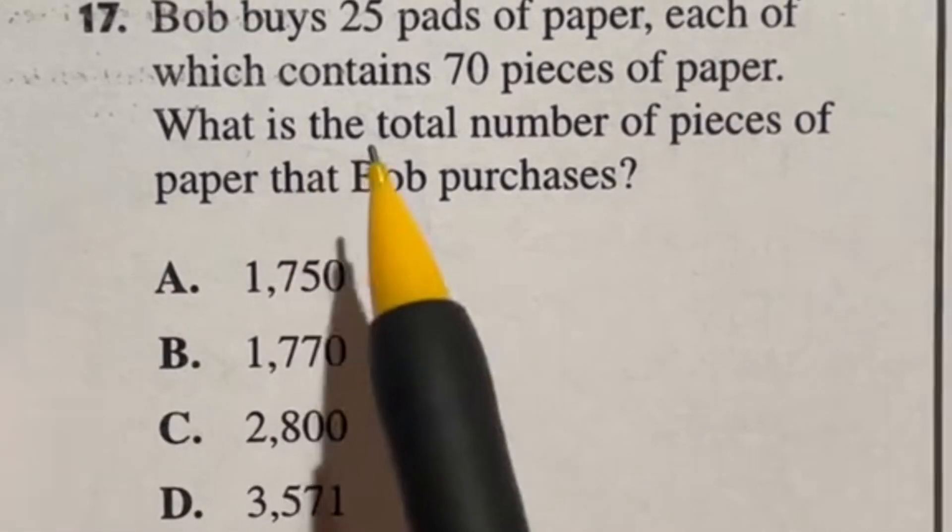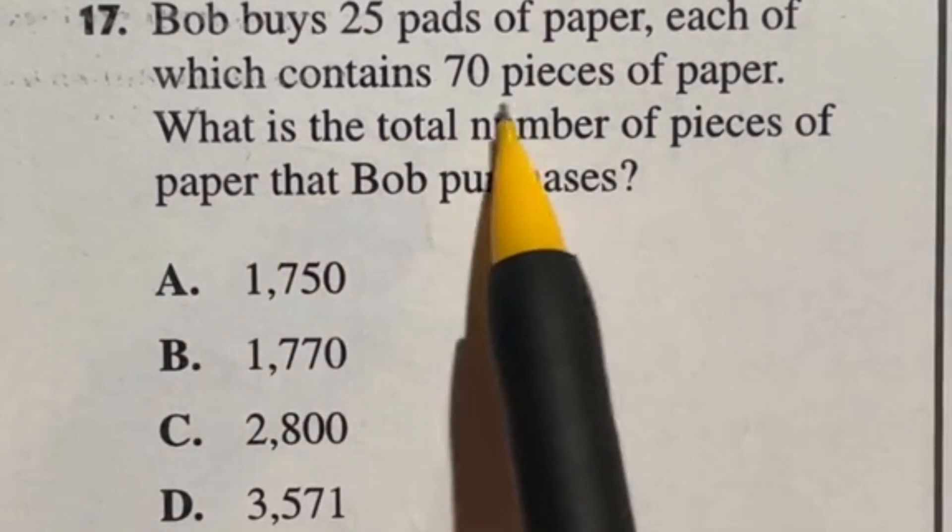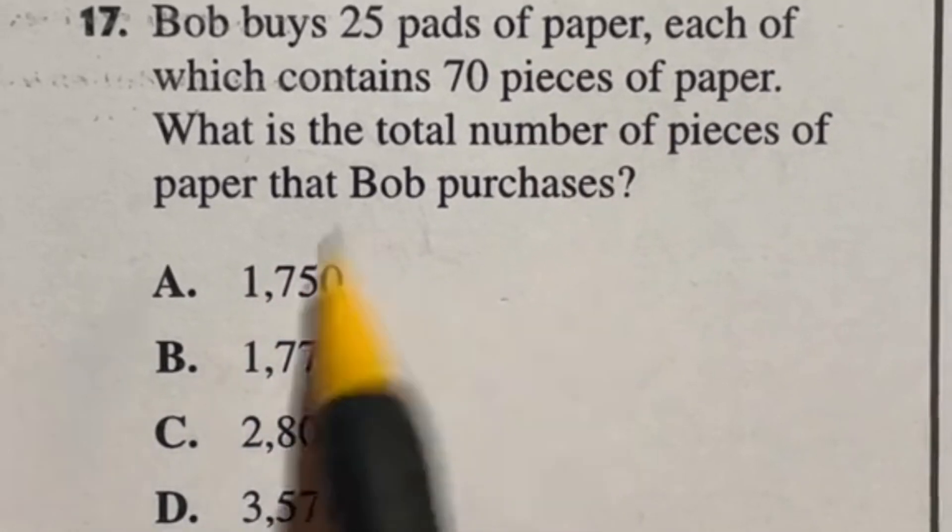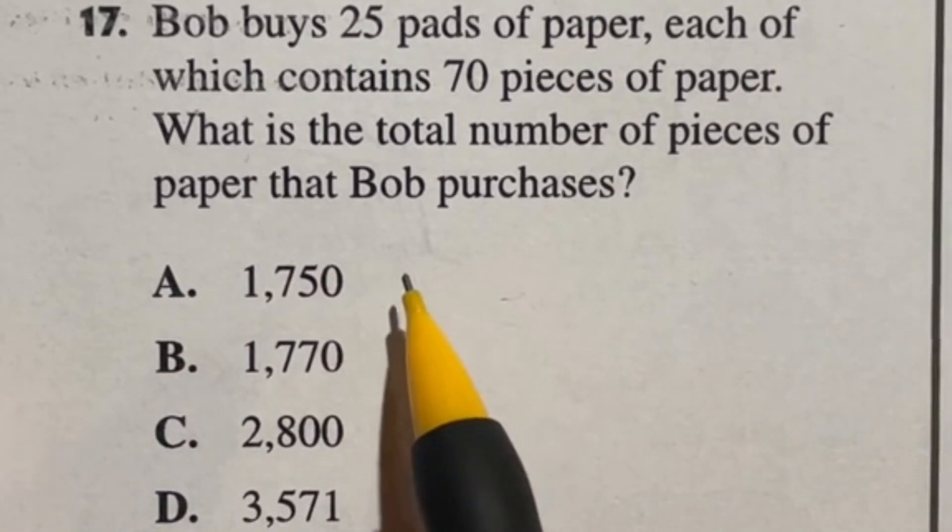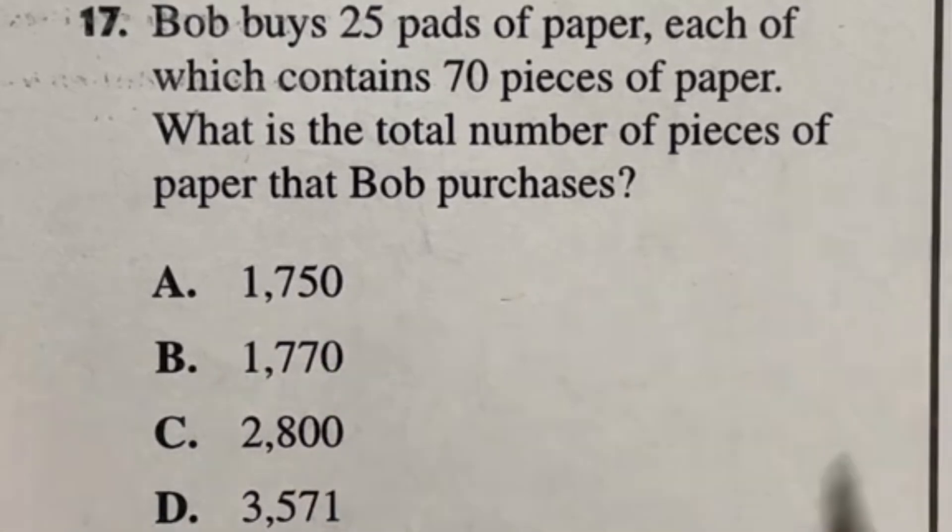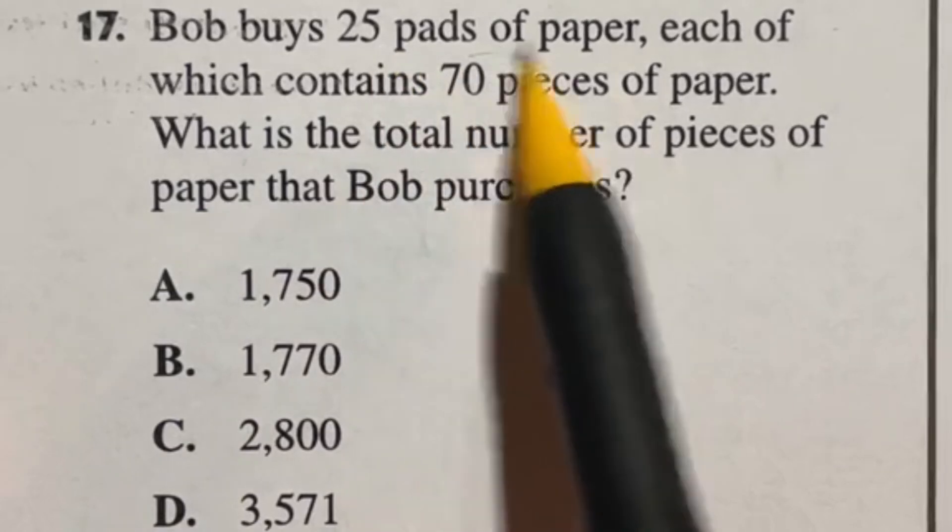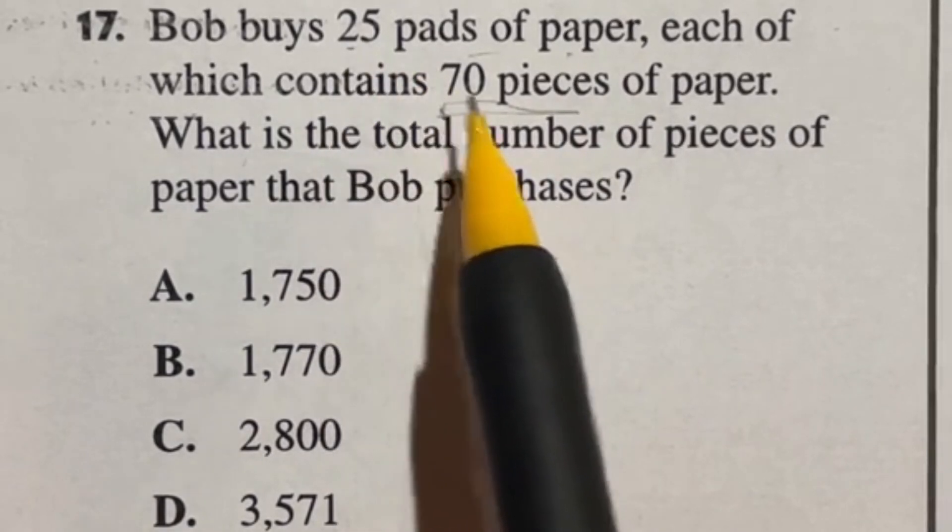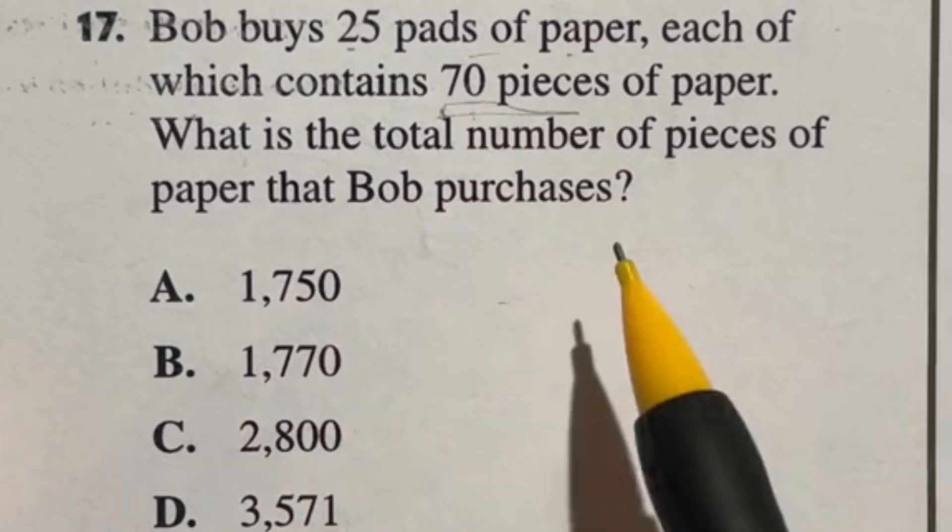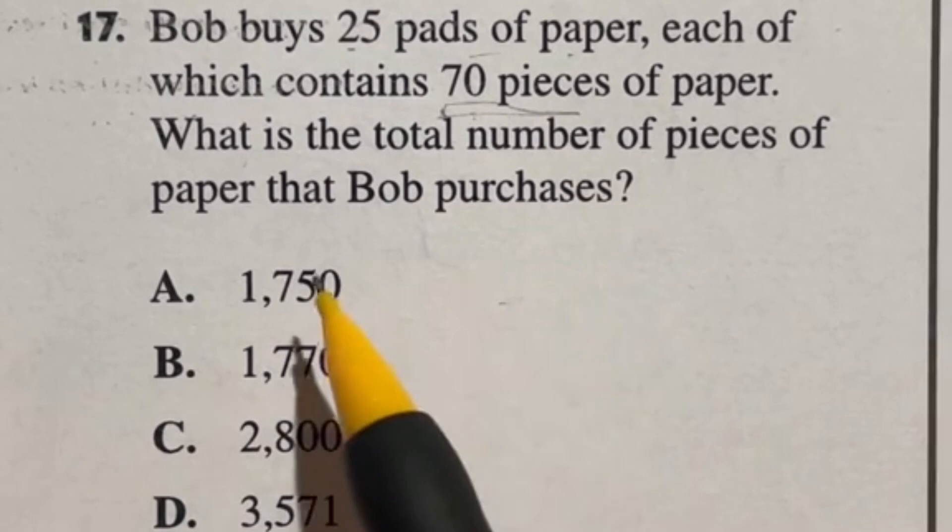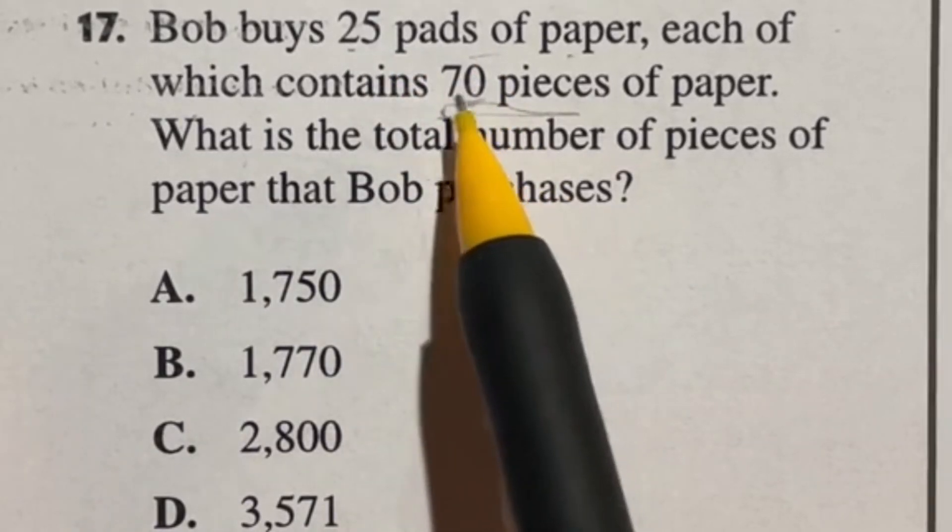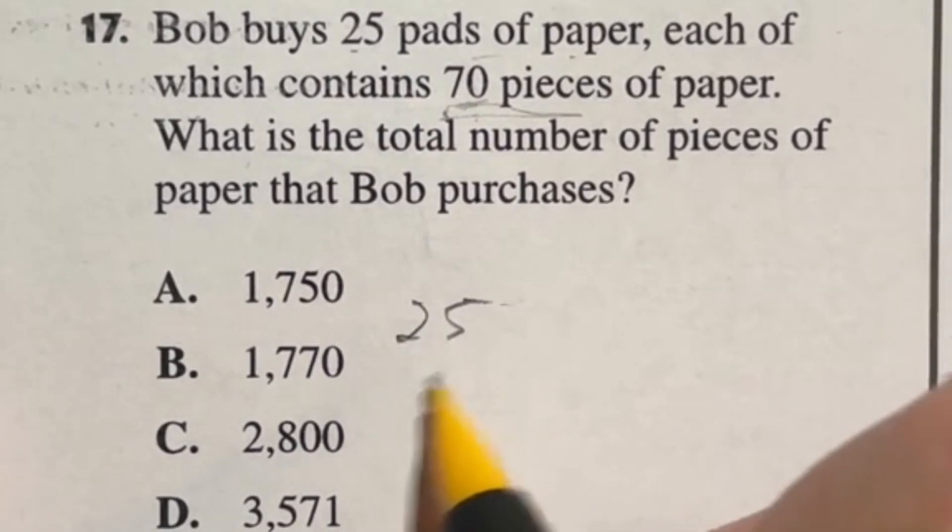For number 17 it says Bob buys 25 pads of paper each which contains 70 pieces of paper. What is the total number of pieces of paper that Bob purchases? So this is again a pretty easy question to go about mathematically, but our issue is a lot of times people trying to understand how do I know when I multiply or divide or add or subtract? In this case just think about what it actually means to do each of these things. In this case we have 25 pads of paper where each one has 70 pieces, so in other words we have 25 groups of 70. When you have multiple groups of an item, that's multiplication.